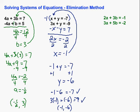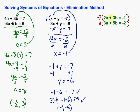Alright, last one. Sometimes we have a situation where we can't just multiply through by negative 1 to make one of the variables into opposites — sometimes we have to multiply both equations by something. In this one, let's make the a's into negative 6a and 6a. To do that, I'm going to multiply the first equation through by negative 3, giving me negative 6a, and multiply the second equation through by positive 2, giving me positive 6a. Then negative 6a and 6a will cancel out.